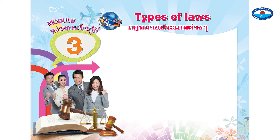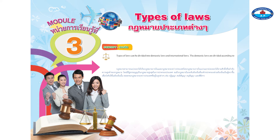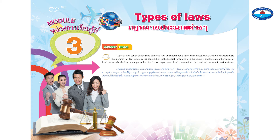Module 3: Types of Laws. The concept of types of laws can be divided into domestic laws and international laws. Domestic laws are divided according to the hierarchy of law, whereby the Constitution is the highest form of law in the country, and there are other forms of local laws established by municipal authorities for use in particular local communities. International laws are in various forms such as declaration, treaty, convention, and protocol.